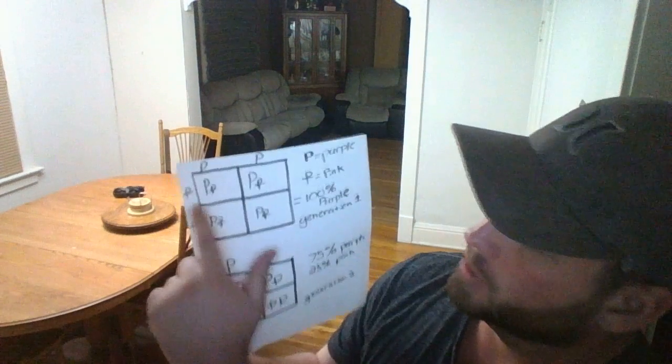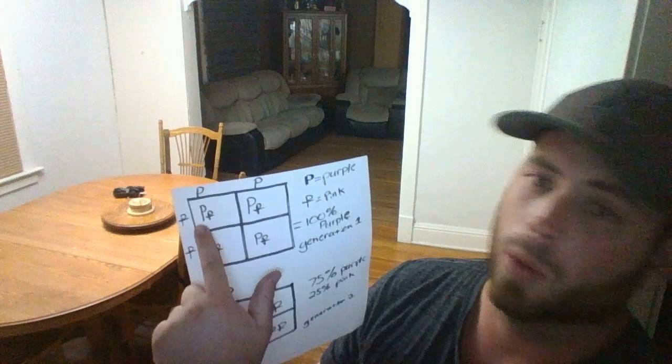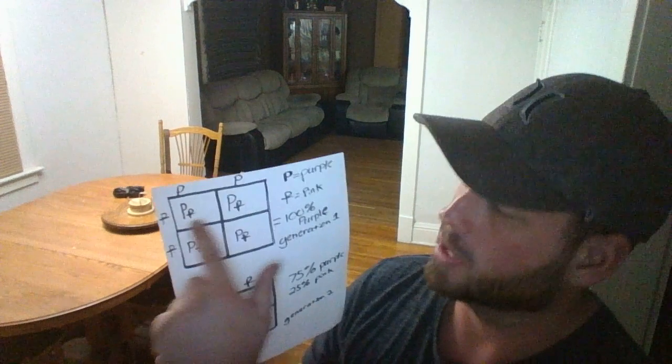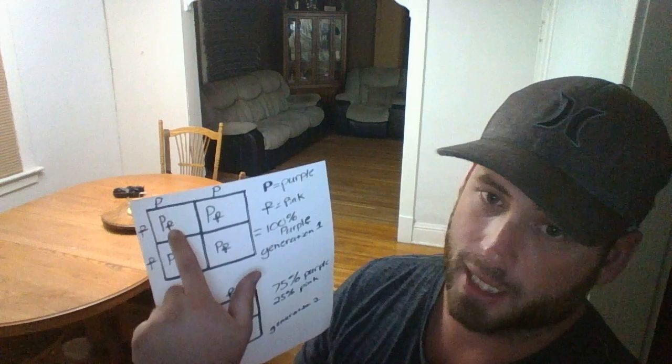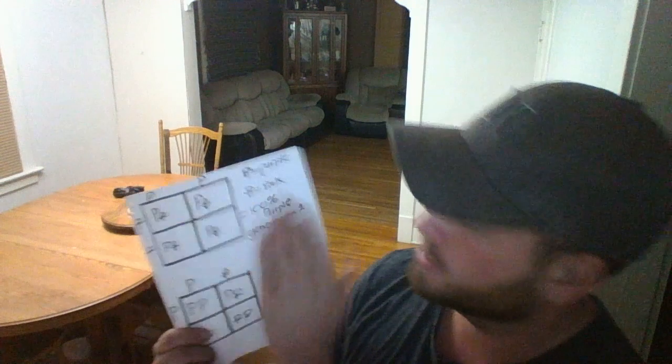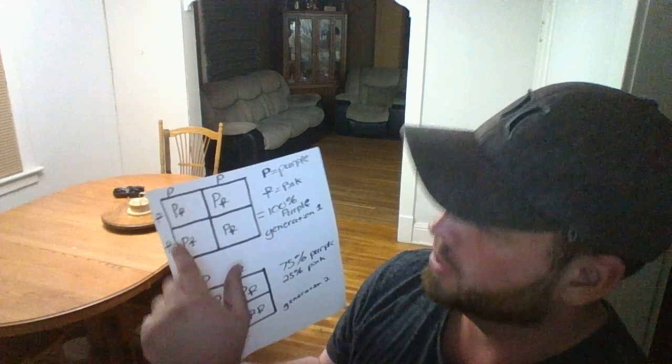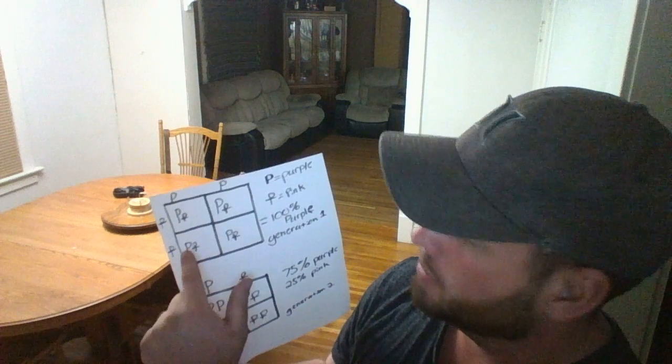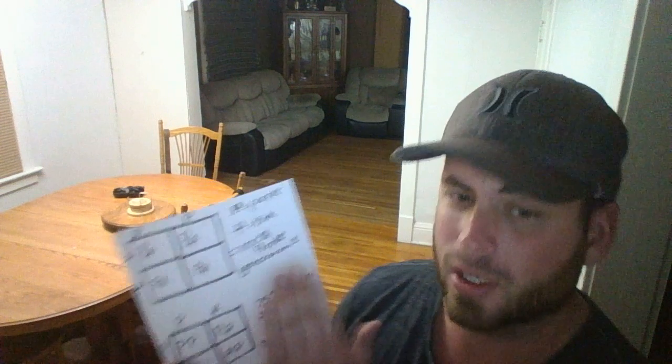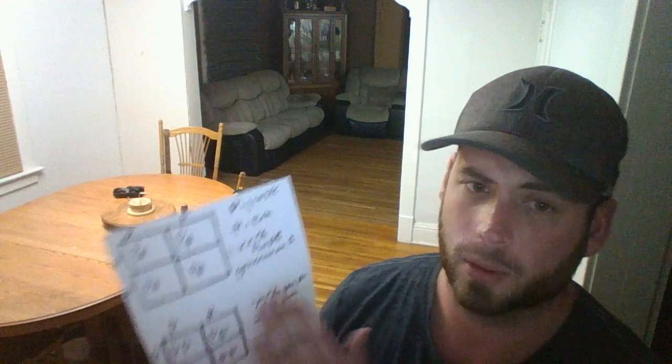In this example, each offspring gains one dominant allele, which is your capital P, and one recessive allele, which is your lowercase p. Since they have the dominant allele, they're going to be purple — so you have a 100% chance of all your offspring being purple.